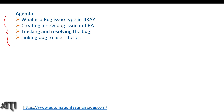Let's talk about the bug type of issue type workflow. What is the bug issue type in Jira? We've already spoken in previous videos about the different issue types in Jira. We have epic, story or user story, bug — which we are discussing right now — and task. These are the major issue types in Jira.